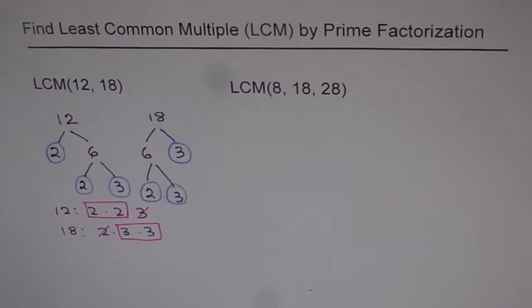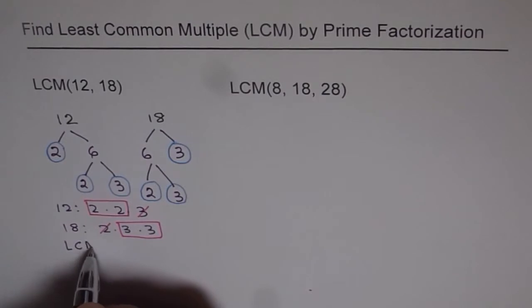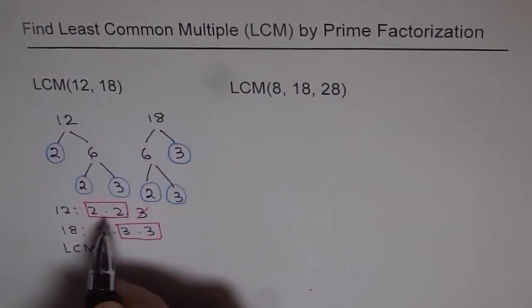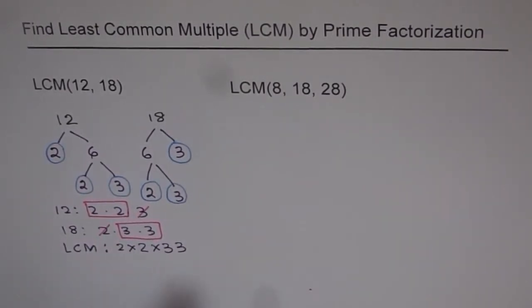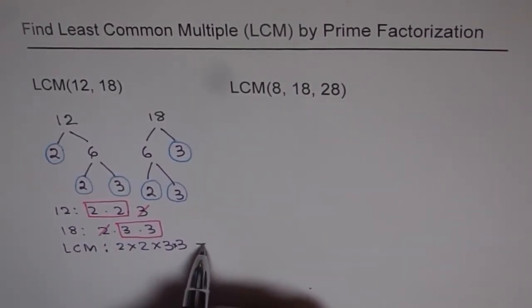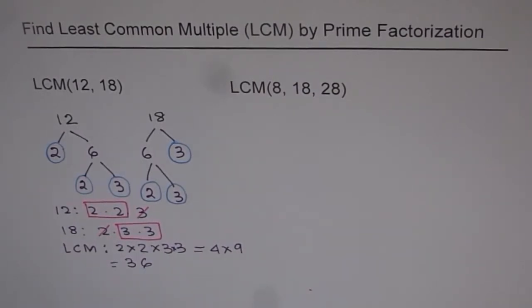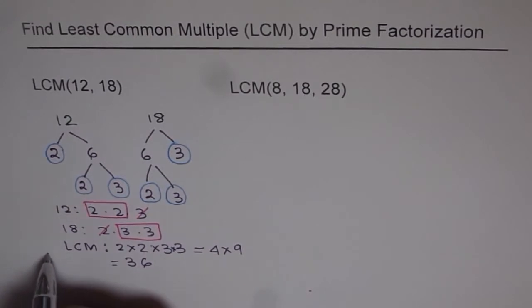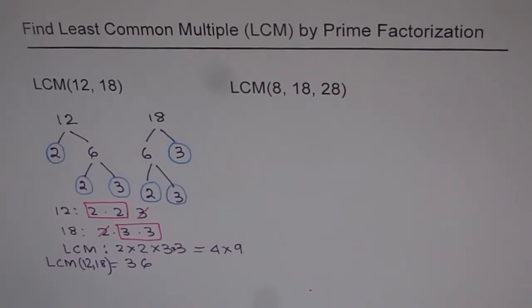With that, we get a list of factors which when multiplied will give us LCM, the least common multiple. Our least common multiple for 12 and 18 is 2 times 2 times 3 times 3. When you multiply them, you get 4 times 9, which is 36. So, 36 is LCM of 12 and 18. That's how you can find LCM of 2 numbers using prime factorization.